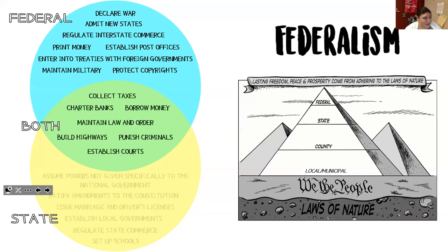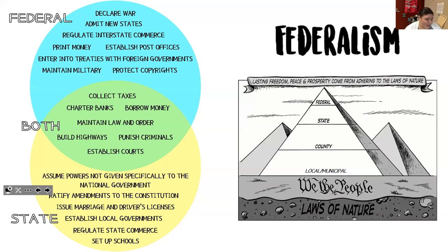States can assume powers not given specifically to the national government — the states can do things that the federal government cannot do. For example, establishing schools and what curriculum they learn. Think about it: this class is Texas history. Do you think Florida is learning about Texas history like we are? States are able to implement their own curriculum and decide how schools work. In Texas, we get out in May, whereas up north in Connecticut, we didn't get out until sometimes the end of June.